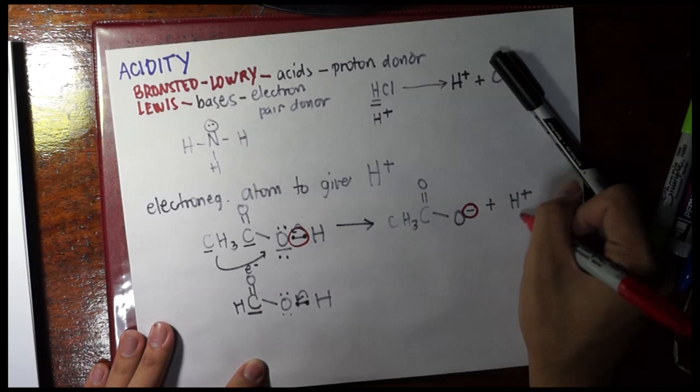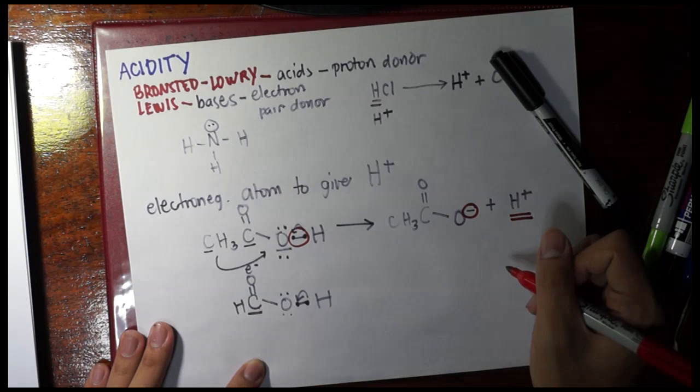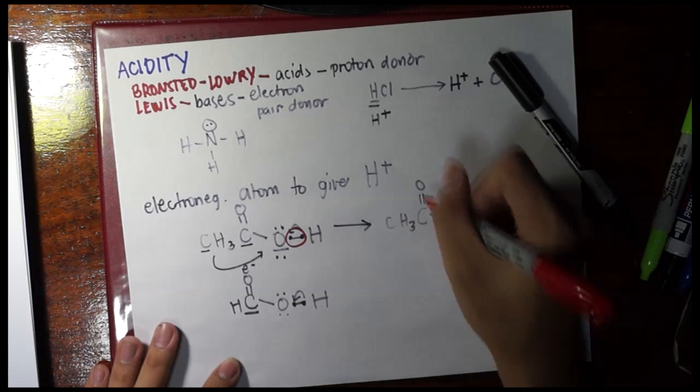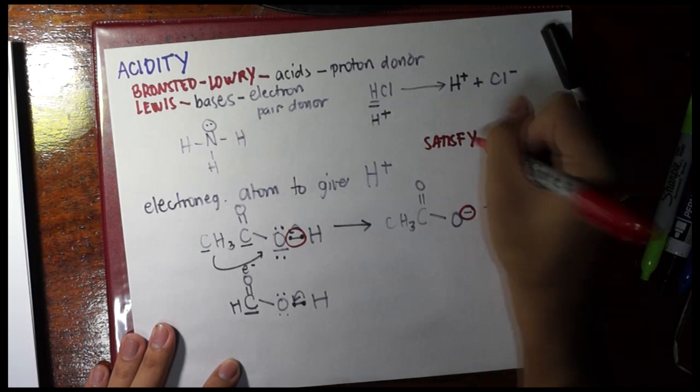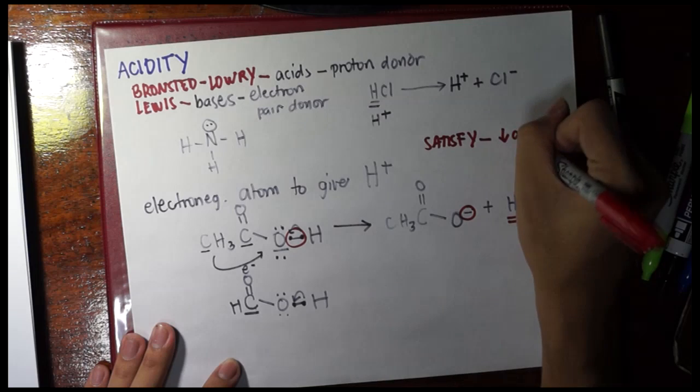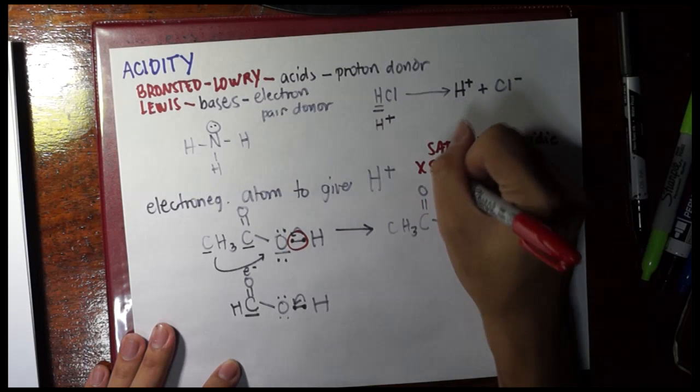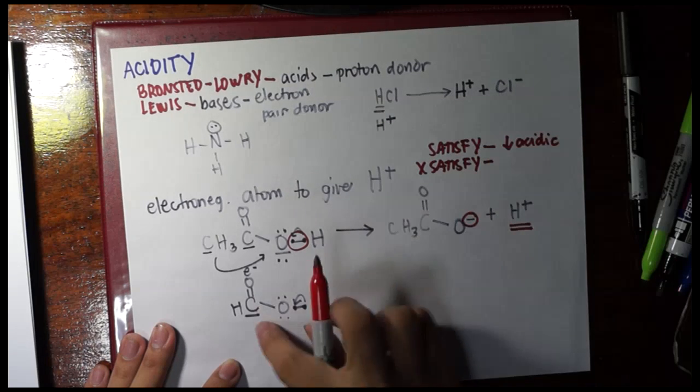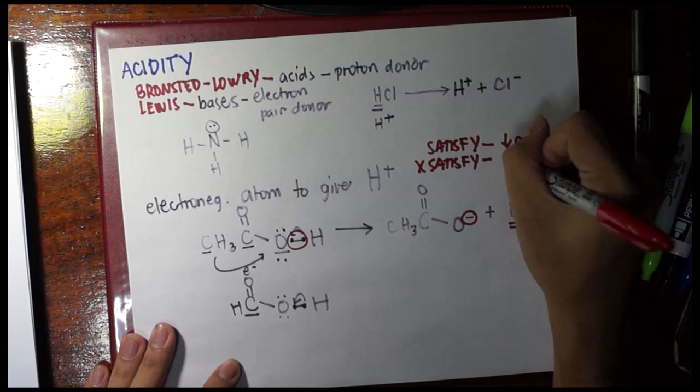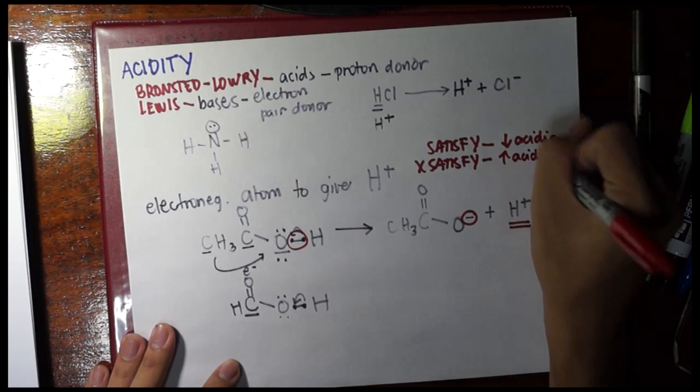And what happens to hydrogen? It loses the electron. It becomes a proton. So the rule is, if you satisfy the electronegative atom, it is less acidic. But if you do not satisfy, that is, you do not donate electrons to it, such as in case of formic acid, it is more acidic.